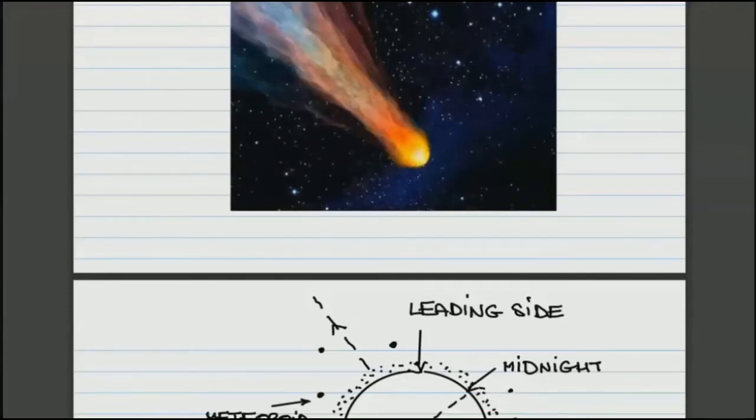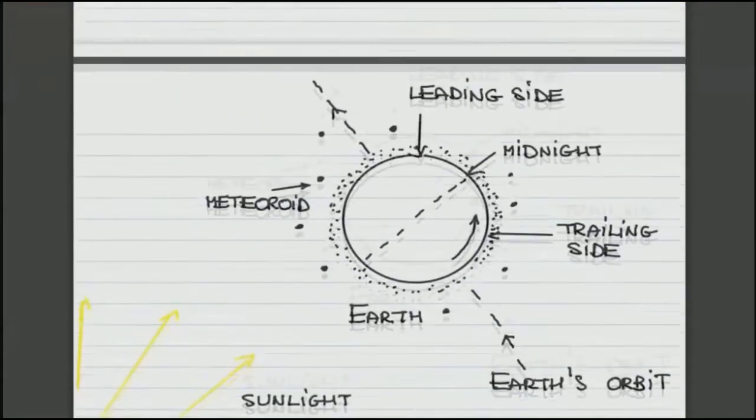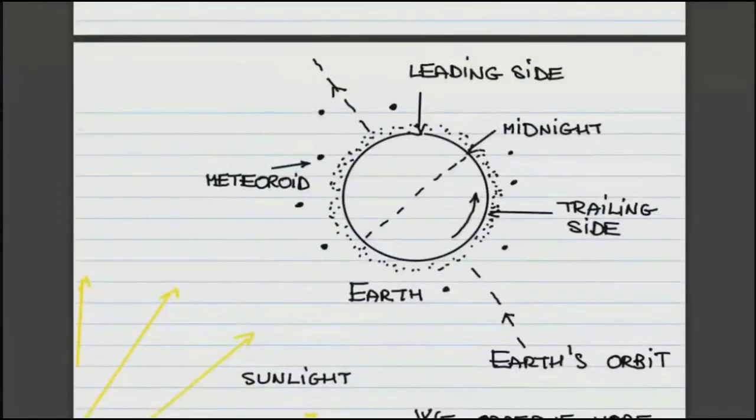The reason is that after midnight, we are on the leading edge of the Earth. Here's the Sun, sunlight coming from the Sun towards the Earth. And this particular location, opposite to the Sun, is where it's midnight.